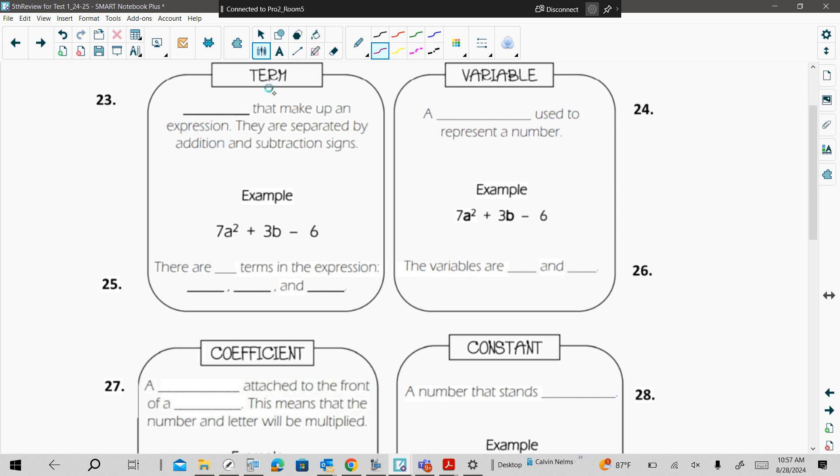The first term here, or term, a term is just parts, the parts that make up the expression, but they are separated by addition and subtraction signs. So the operation signs, this plus here and this minus here, separates our terms. So that means this is the first term, this is the second term, and this is our last term. So how many terms do we have here? Yeah, so there are three terms in this expression.